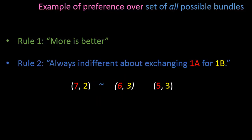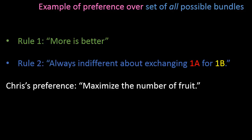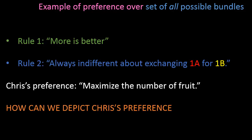Comparing the middle bundle to the right bundle: the middle bundle has just as many bananas as the right bundle but strictly more apples. Therefore, by rule 1, the middle bundle is strictly preferred to the right bundle. Using transitivity, we can infer that the left bundle is strictly preferred to the right bundle. So using just these two rules, we can always determine, given any two bundles, whether Chris strictly prefers one to the other or is indifferent. In fact, the two rules boil down to something concise: Chris's preference is simply to maximize the total number of fruit he has. Next, we'll try to depict this preference on our usual graph by constructing indifference curves.